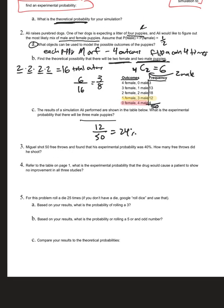Example 3: Miguel shot 50 free throws and his experimental probability of making one is 40%. To find how many he made: 50 × 0.4 = 20 shots made, which means he missed 30. We're just calculating probabilities in reverse here.